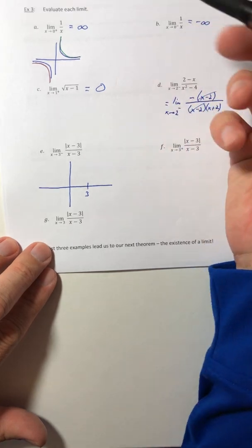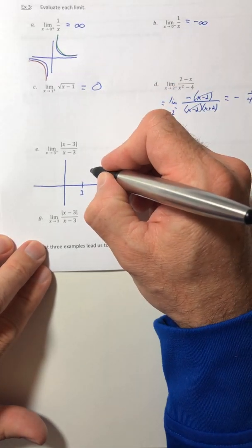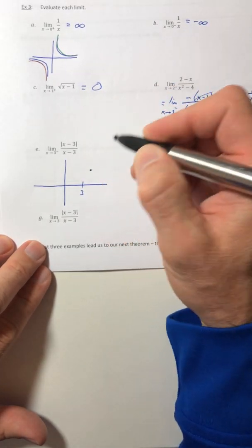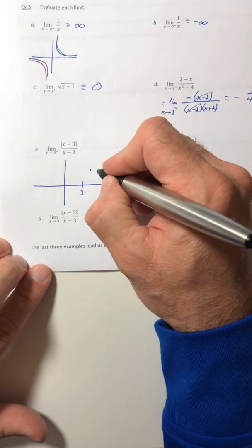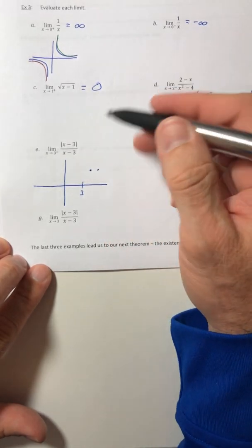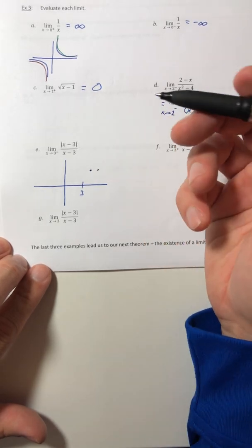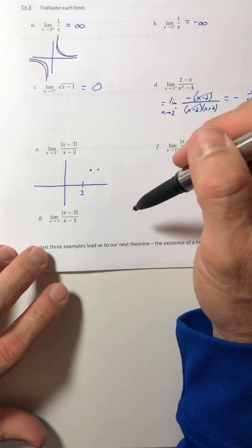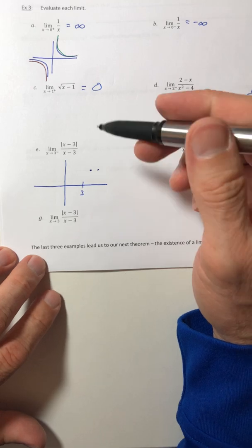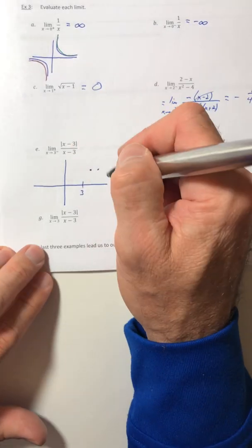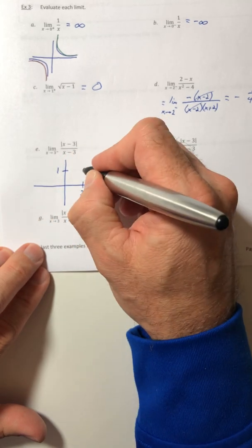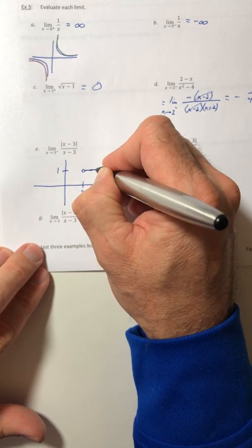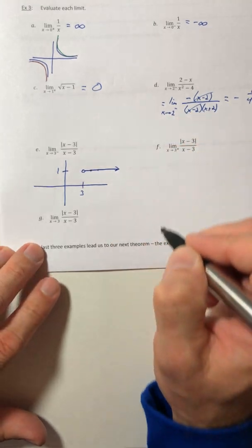Well, if you plug in an X equals four, you would end up with one as your answer. If X is equal to five, you'd end up with one again. If X is equal to eight, you get one. If it was 10, you get one. If it was 30, you'd get one. If it was 5,289, you'd get one. So if it's bigger than three, you get one.